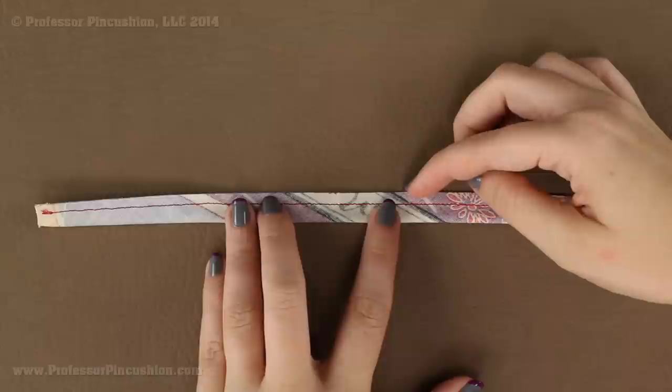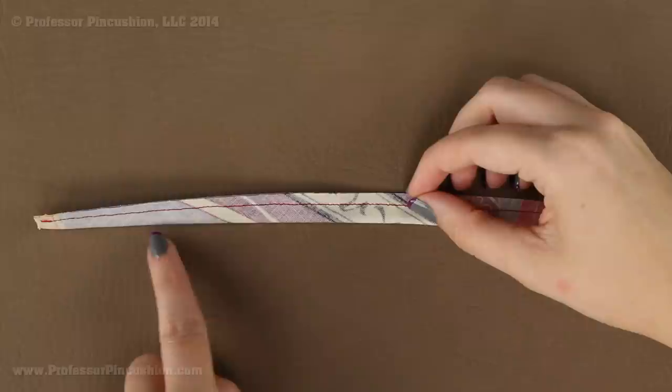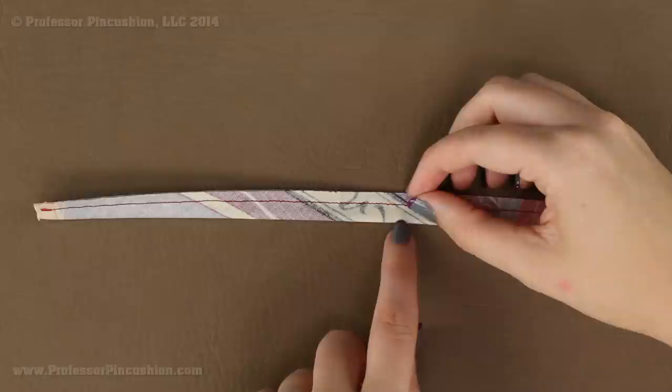After you finish stitching your strip, check your seam allowance on the raw edge side. From the raw edge to the stitching should be about an eighth of an inch, because we want to make sure we can turn this right side out easily. If your seam allowance is too big, it is going to be really hard to get through the tube. So if you need to, trim the seam allowance.